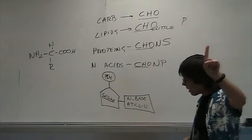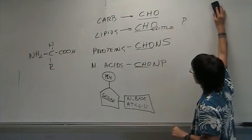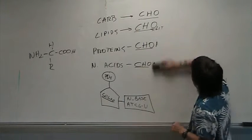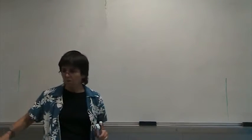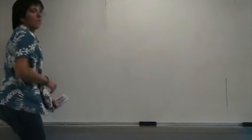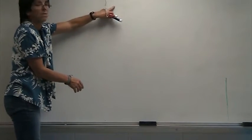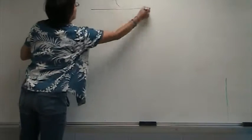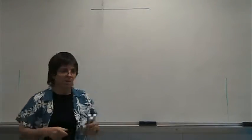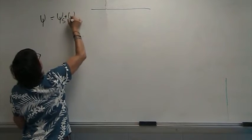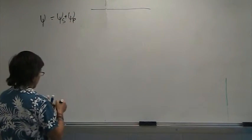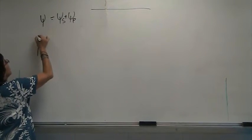Now I want to go over some highlights of water potential and mostly its application. Water potential has two components: solute potential plus pressure potential. I'm going to draw a chamber with a semipermeable membrane — side A and side B. I'll put more solutes on one side and fewer on the other. The dots represent solutes.